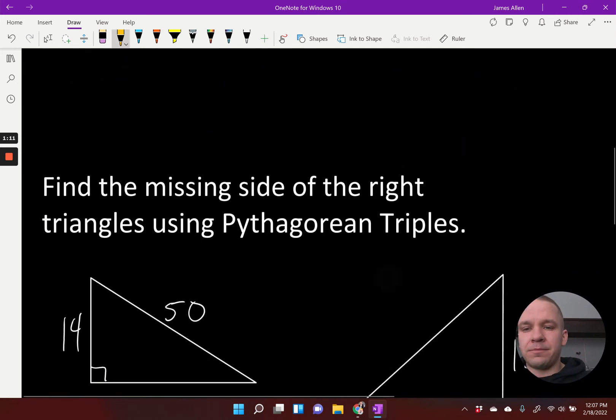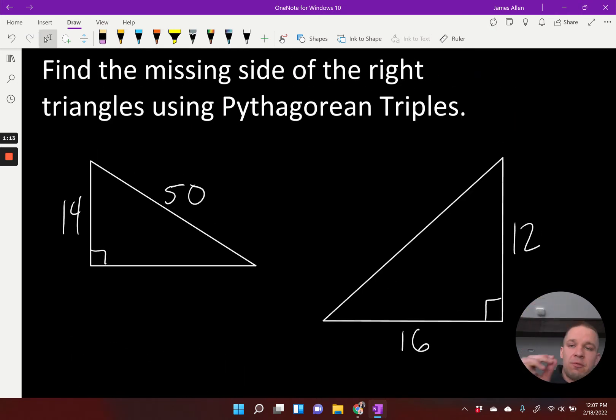So let's do a couple examples with them. We want to find the missing side of the right triangles using Pythagorean triples. So I'm not going to use A squared plus B squared equals C squared and calculate it all out. We're going to try to do this using the families. All right, so 14 and 50. That's not one of the ones that I just saw. But if I were to cut those both in half,